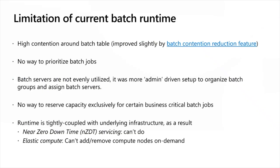There are certain limitations we have seen in the current batch runtime framework. One of the key ones is the high contention on batch-related tables that we have seen since AX 2012. There are two tables — the batch and batch job table — which maintain the queue for batches: initiating, executing, and finishing. We have seen high contention blocking and deadlocks on those tables. A batch contention reduction feature was introduced in PU 21, which significantly reduced contention, however we still see high contention on batch-related tables.